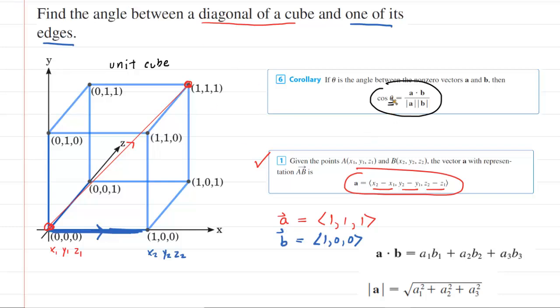Now that we have that, we can use the corollary. To use the corollary, we also need to know how to compute the dot product between a and b, and we need to figure out the magnitude of a and the magnitude of b. We've written down the dot product equation and the magnitude of a equation here for reference.